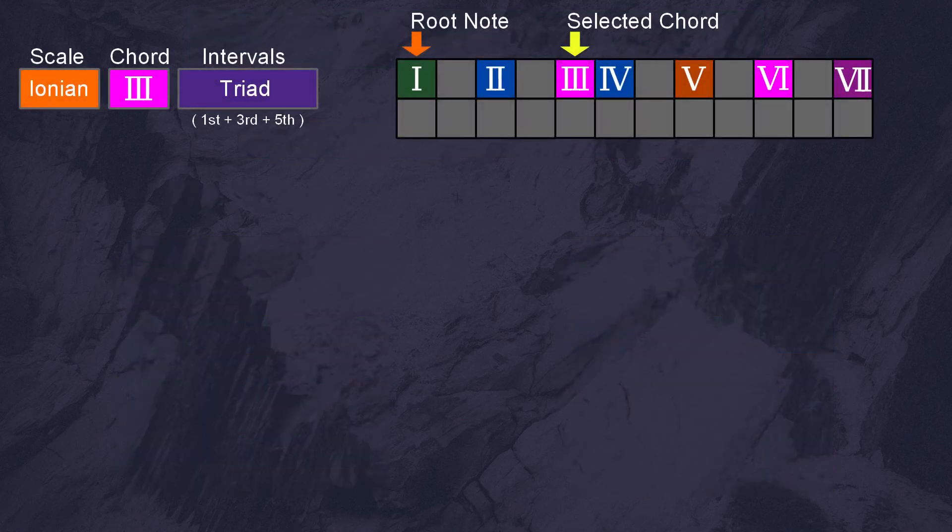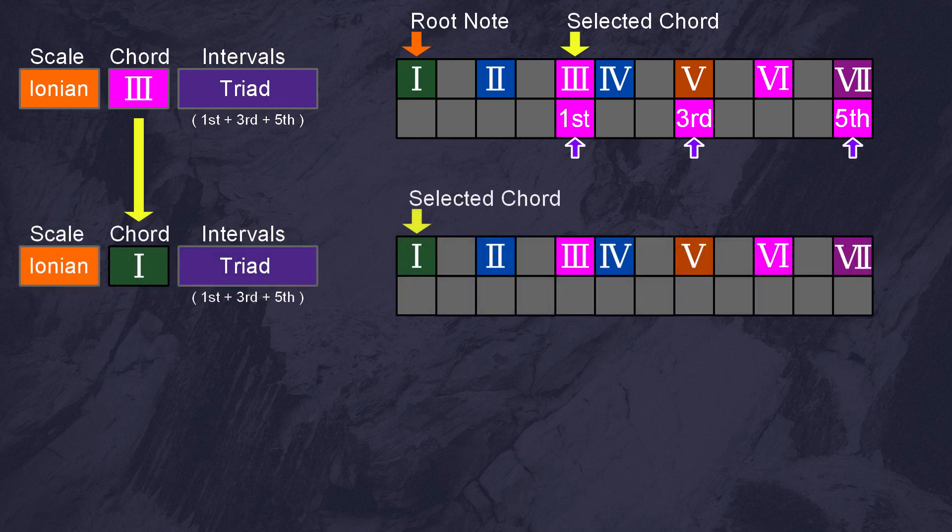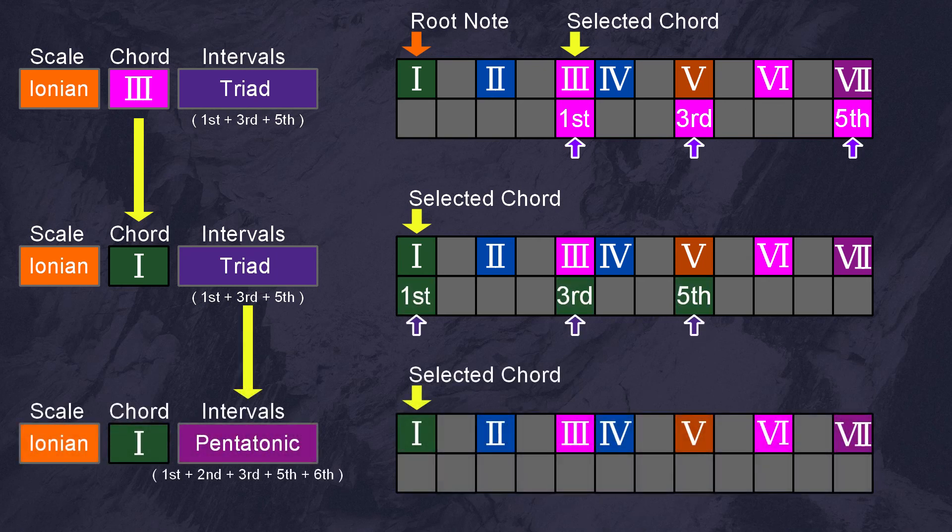Knowing what chord we are in allows us to direct how we want the melody to sound, by further restricting the available notes within the scale. For example, if we want to play the intervals of the triad, we can count up the intervals starting from the currently selected chord. When we change chords, we simply move the intervals to correspond with the new chord. And we can always modify what intervals we want to play. For example, we can choose to play a pentatonic scale alongside the selected chord instead of the triad.